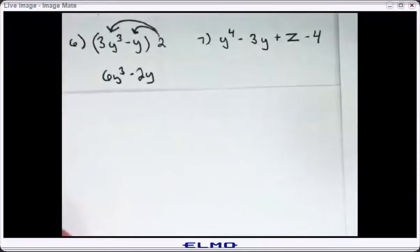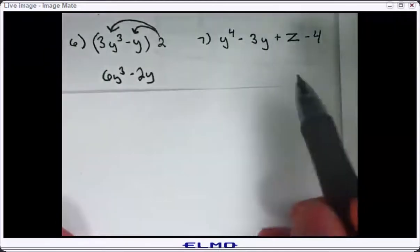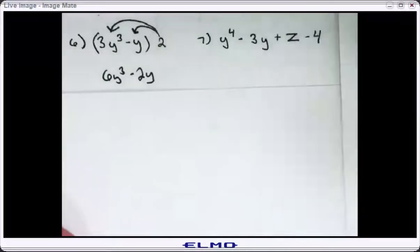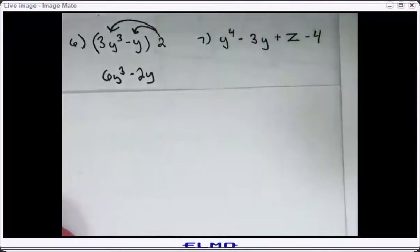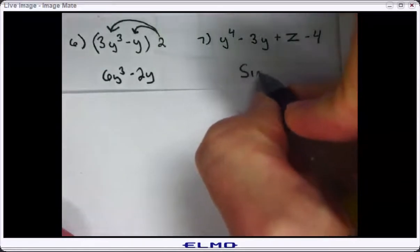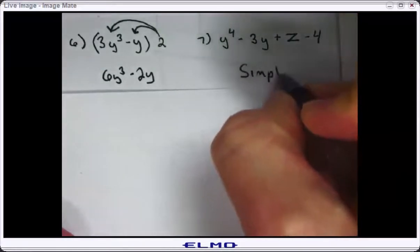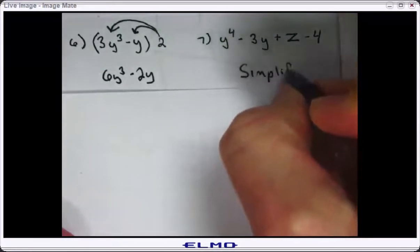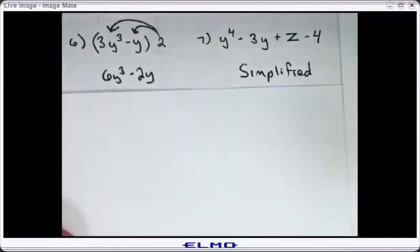Number seven. I don't have any grouping symbols, so there's no distributive property. I look for like terms — I don't have any like terms. Sometimes the answer is already simplified. There's nothing to do. It is in simplest form.